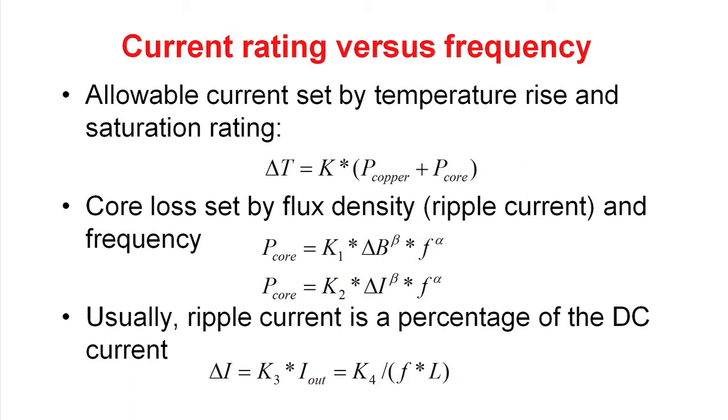Usually ripple current is set as a percentage of the DC output current. So the change in current in our inductor is equal to some percentage of the output current. Or we can rearrange this expression. It's another constant divided by the frequency times the inductance.